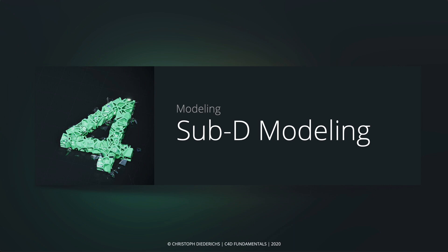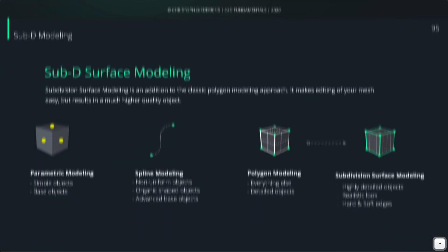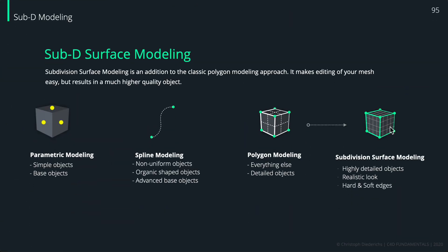In part 4 of this series we want to have a closer look at a modeling technique which is called subdivision surface modeling, or also sub-D modeling. That's not only for Cinema 4D — you will find similar techniques also in different 3D modeling applications. Subdivision surface modeling is kind of an addition to the classic polygon modeling approach, but it adds special features so that we can create even more detailed, realistic looking objects.